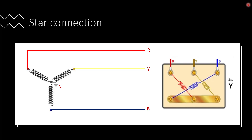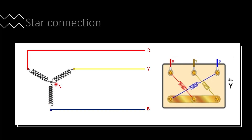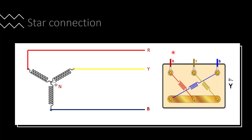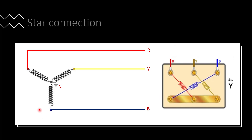If the transformer is in star connection, one end of all three windings is connected together to form a neutral. You can see three phases R, Y, B — one end is tied together, connected together, and grounded. This point is neutral. In the right picture, you can see the connection arrangement in the transformer also. These phases are coming from the generator or supply side, and all three, one end is connected together, forming a star connection.